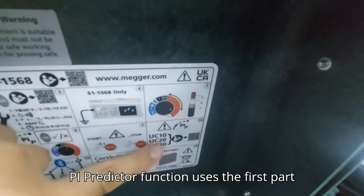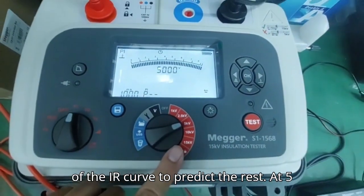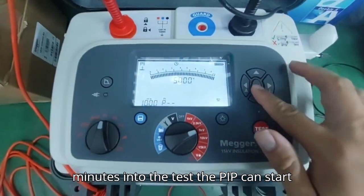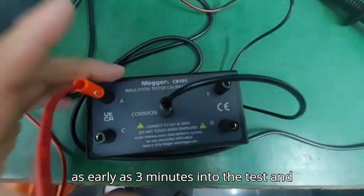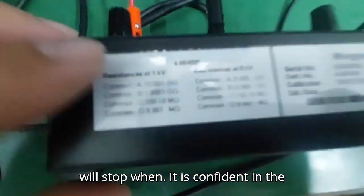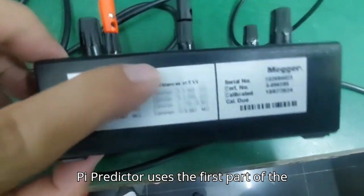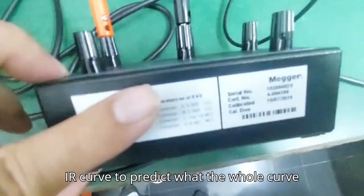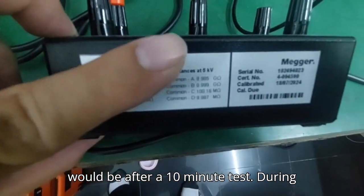The PI predictor function uses the first part of the IR curve to predict the rest. At 5 minutes into the test the PIP can start as early as 3 minutes into the test and will stop when it is confident in the prediction. PI predictor uses the first part of the IR curve to predict what the whole curve would be after a 10-minute test.